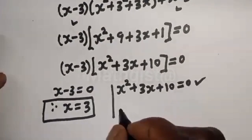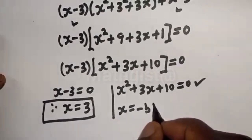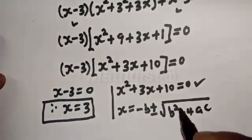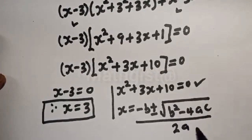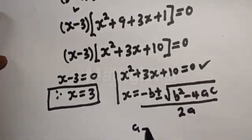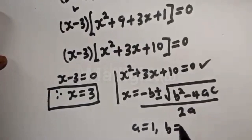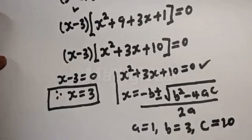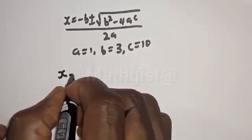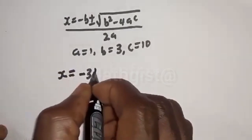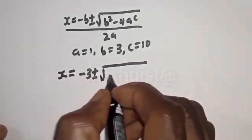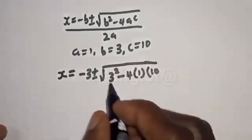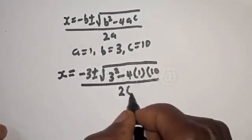The quadratic formula gives s = (−b ± √(b² − 4ac)) / 2a, where a = 1, b = 3, and c = 10. Substituting: s = (−3 ± √(3² − 4 × 1 × 10)) / (2 × 1).